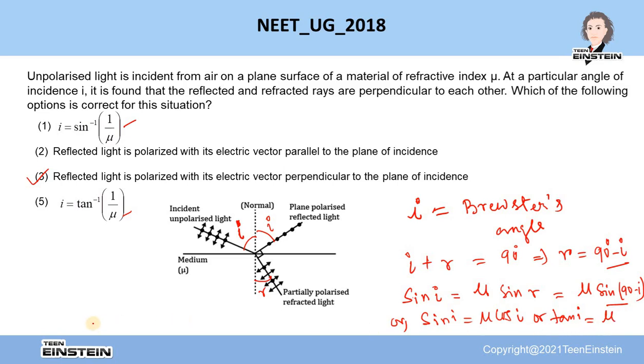Therefore, you can see that I will be tan inverse of mu. This is actually called Brewster's law.